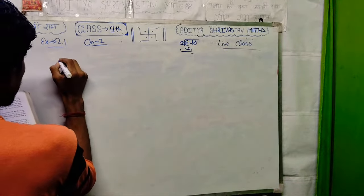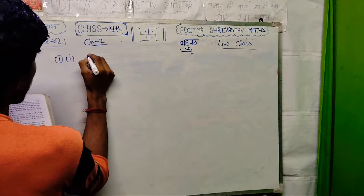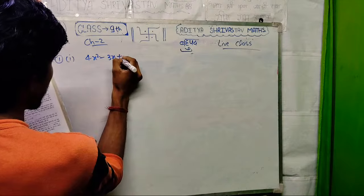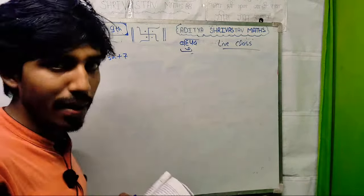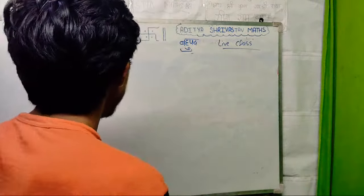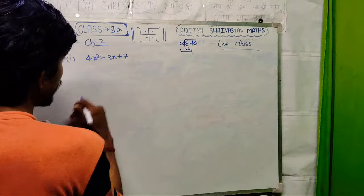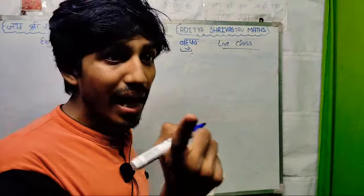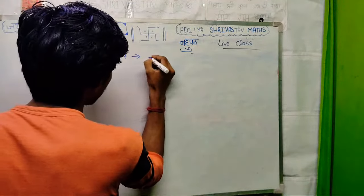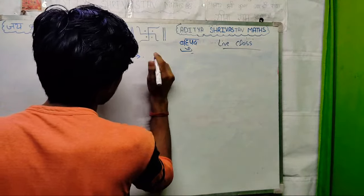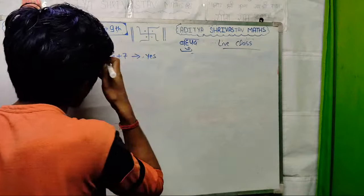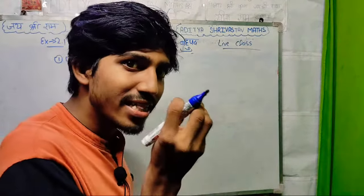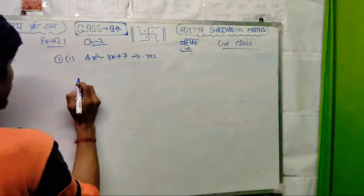Now look here — first you have 4x squared minus 3x plus 7. Does it qualify? Yes. Here you have x, x, and x — what is your variable? x is given here. What is your variable in one position? You have to write yes, because here you have only one variable, x, in every location. So you have to say yes — one picture, one variable.